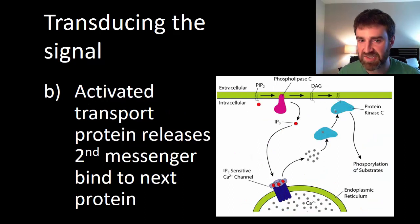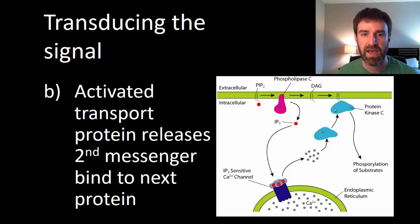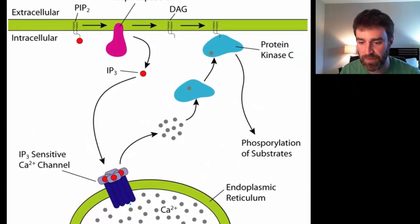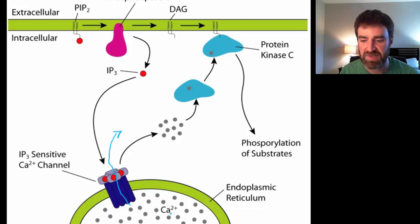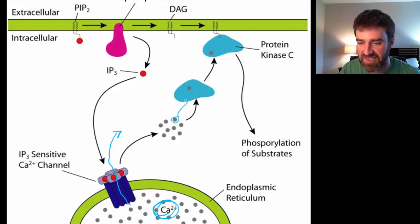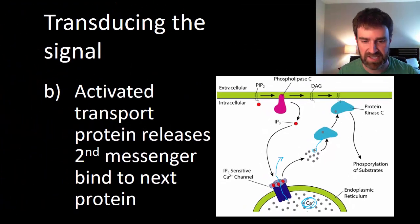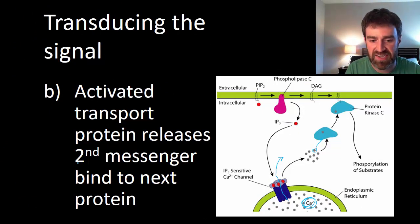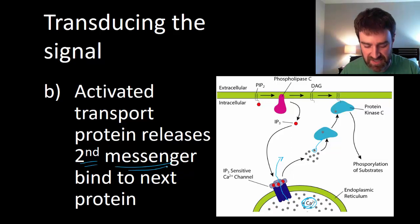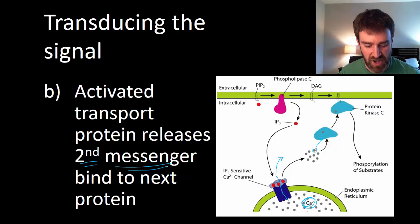In some cases what we're activating in the next step is a transport protein, often embedded in an organelle membrane within a eukaryotic cell. Activating or opening that transport protein allows a chemical — often ions like calcium — to diffuse out of that organelle into the cytoplasm. That calcium can then bind at the allosteric site of the next protein, passing the signal along. Whenever we release a new chemical inside the cell to activate the next protein, we call it a second messenger, following the initial first messenger which was the ligand.